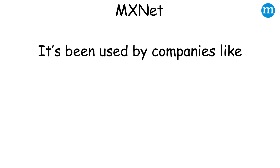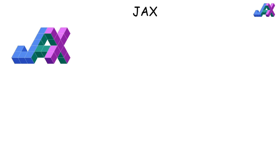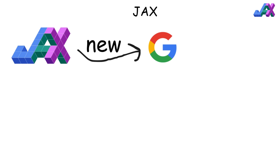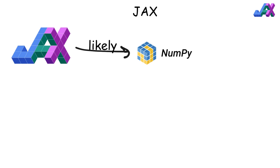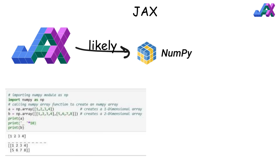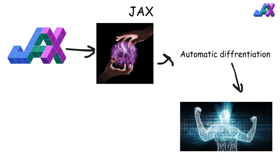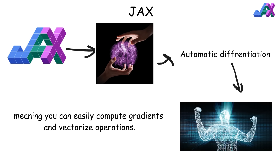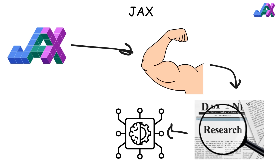JAX is Google's newer framework that's gaining a lot of attention. It's built for high-performance numerical computing and machine learning research — like NumPy on steroids. JAX lets you write NumPy code that runs efficiently on GPUs and TPUs. The real magic is in its automatic differentiation and function transformations, meaning you can easily compute gradients and vectorize operations. JAX is becoming popular in the research community for training large models and experimenting with new architectures.